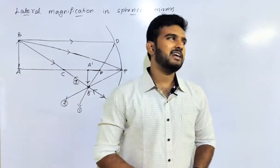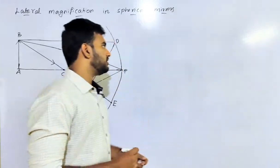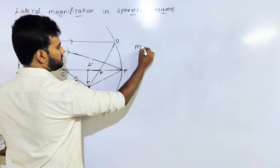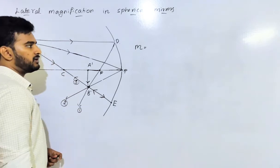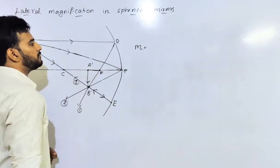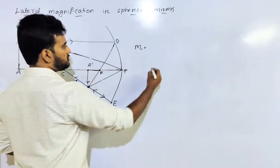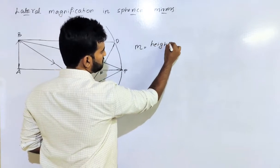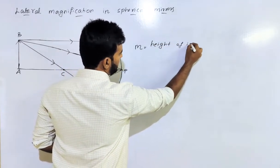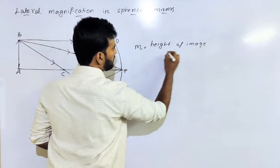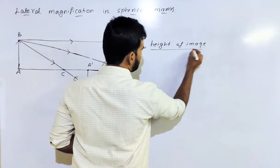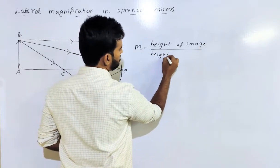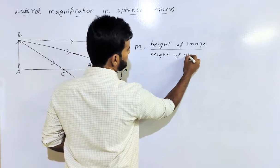Lateral Magnification — we denote it small m. Magnification, small m, equals to height of image divided by height of object.